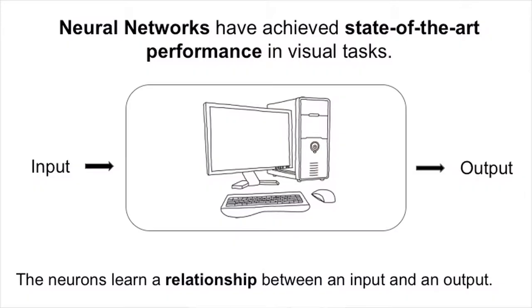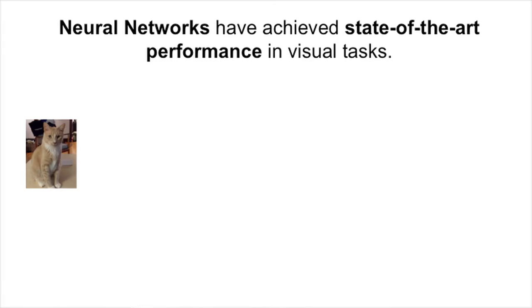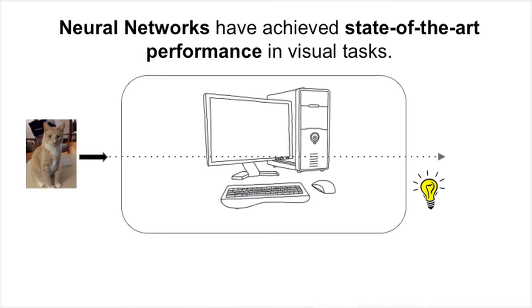Neural networks can be seen as a computer that performs mathematical operations on an input and then produces an output. Neural networks have been really, really good at visual tasks like classification. In a task like that, you basically feed an input image to your neural network, the computer performs operations on this image, and produces the label "cat."